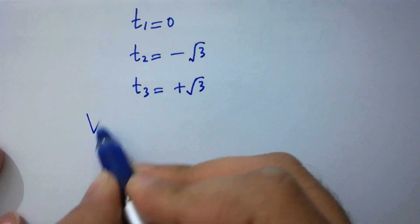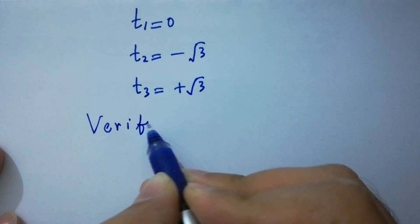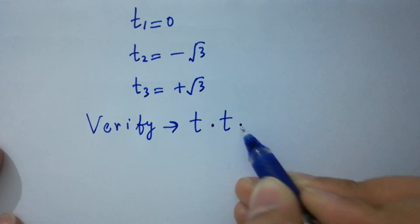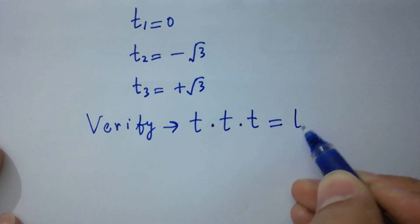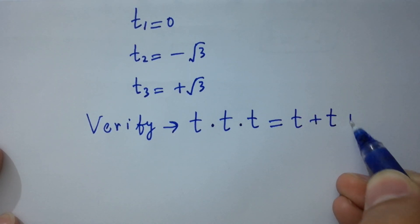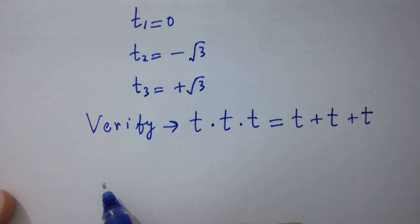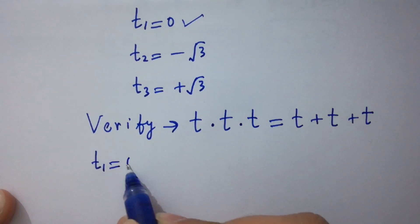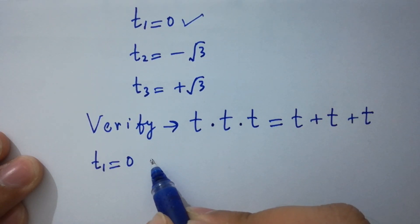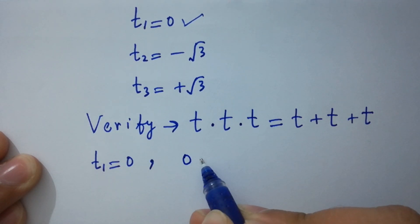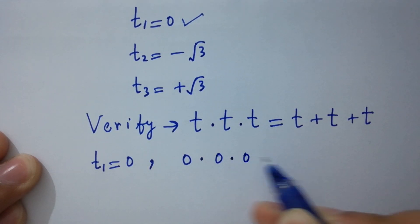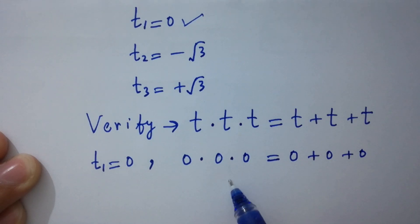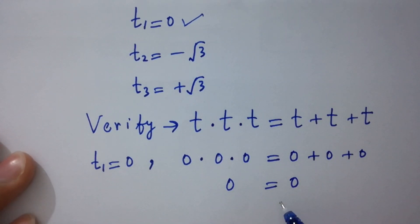Now I am going to verify t times t times t equal to t plus t plus t. Taking t₁ equal to 0: 0 times 0 times 0 equals 0 plus 0 plus 0, which gives 0 equal to 0 — left hand side equals right hand side.